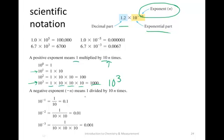Conversely, if the exponent is negative, that means you're going to divide your decimal part by 10, n times, n equaling the exponent value. So, 10 to the minus 1 is 1 divided by 10. 10 to the minus 2 is 1 divided by 10 divided by 10, or 0.01.